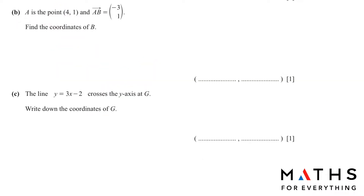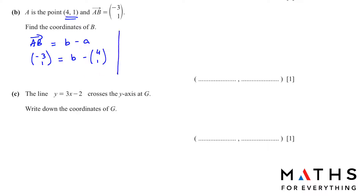In part b, A is the point (4,1) and vector AB = (-3, 1) in column form. Find the coordinates of B. You should know that vector AB = B - A. We have AB = (-3, 1) and A = (4, 1) in vector form. Shifting A to the other side: B = (-3 + 4, 1 + 1) = (1, 2). So the coordinates of B are (1, 2).